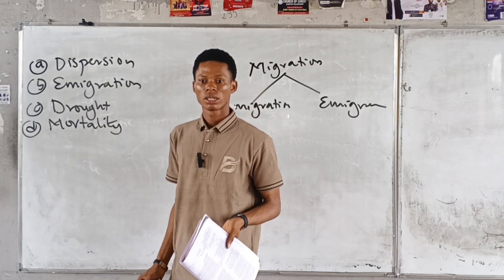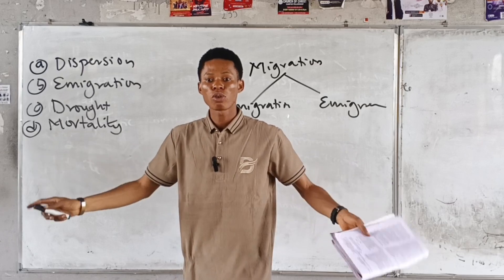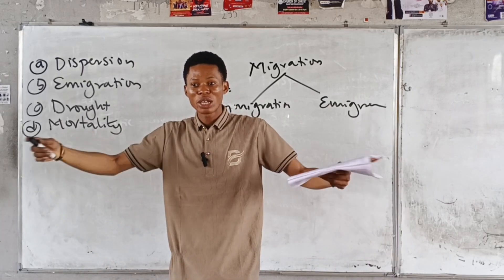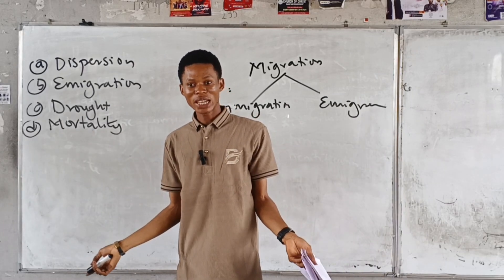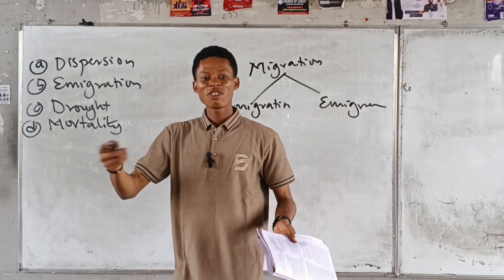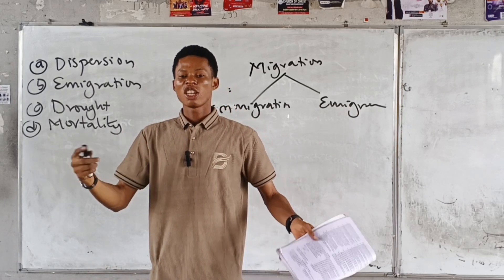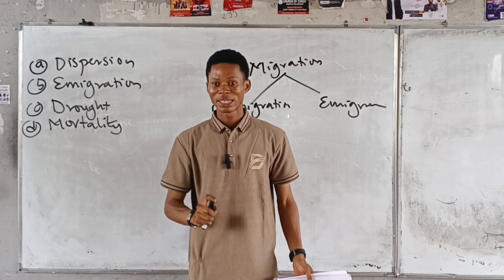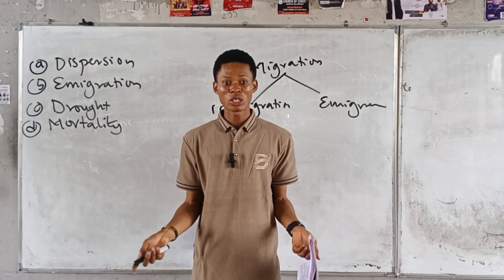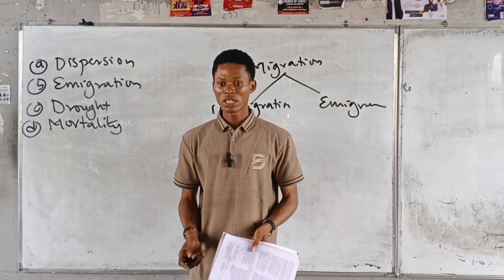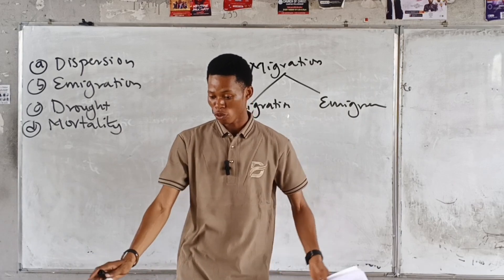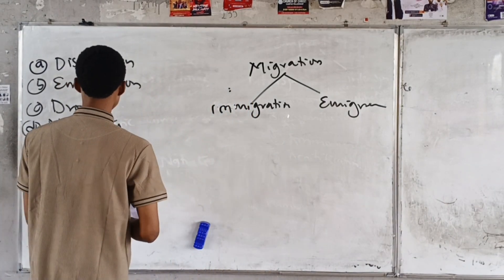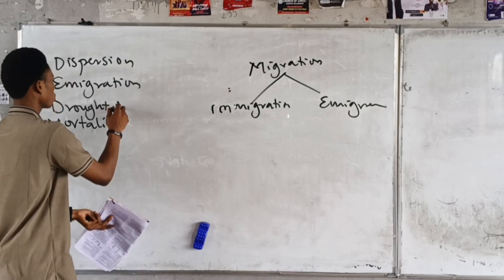Mortality means death. The more people die, the fewer persons you have, and the few remaining will enjoy what is left — so mortality reduces competition. But natality means birth. If birth rates increase — like in Nigeria with no birth control, 10 to 15 children — before you know it, people are crowded and competing for space and resources. So the answer to that question is drought.